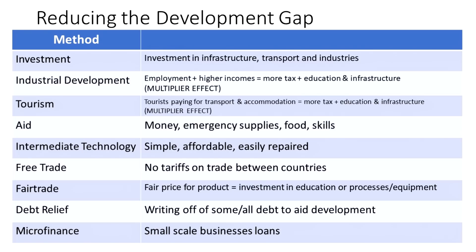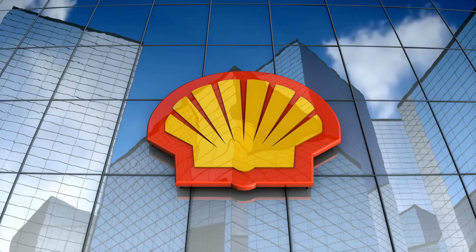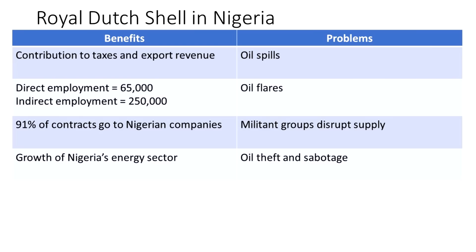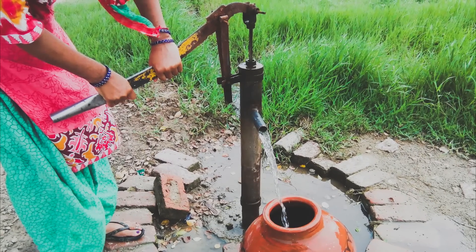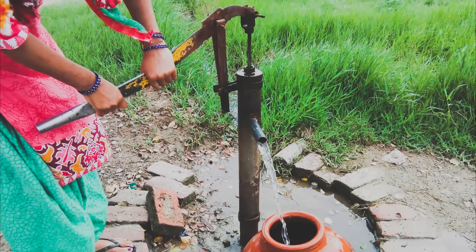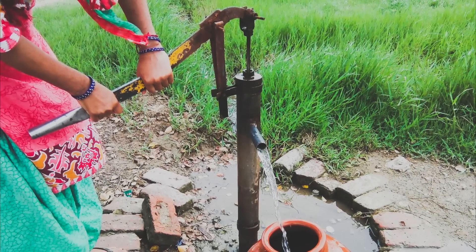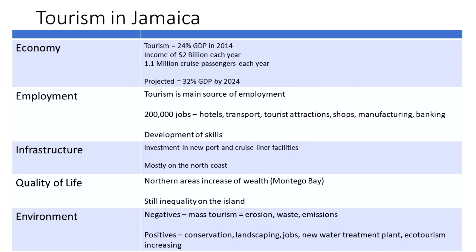Transnational corporations (TNCs), aid and tourism are all methods of reducing the development gap, and you should have investigated various examples for each. My pupils have looked at Shell in Nigeria, different aid projects such as debt relief, fair trade and intermediate technologies, as well as tourism in Jamaica, Kenya or Tunisia.